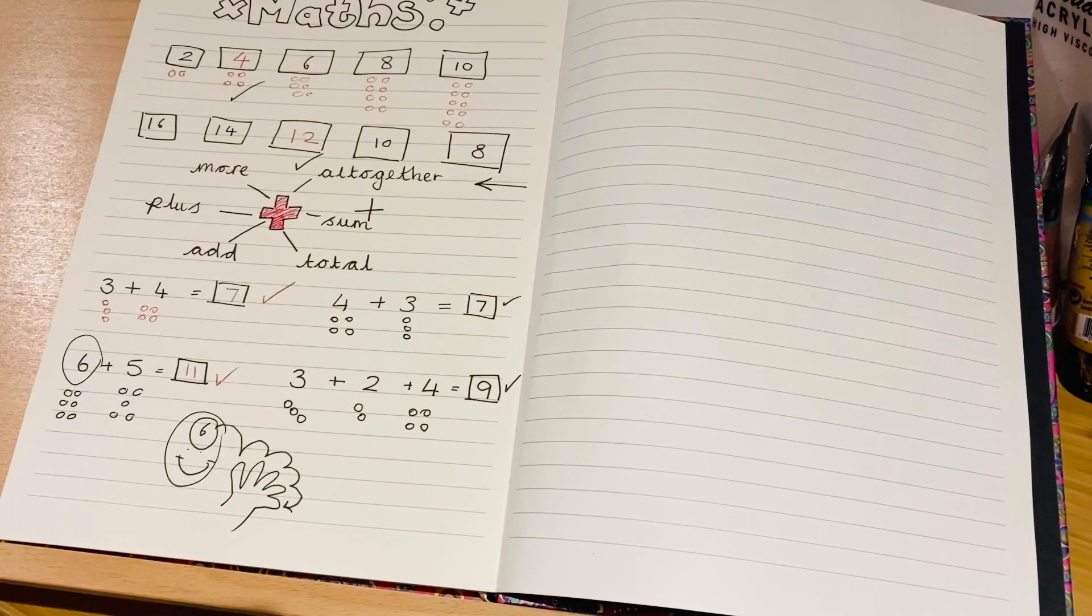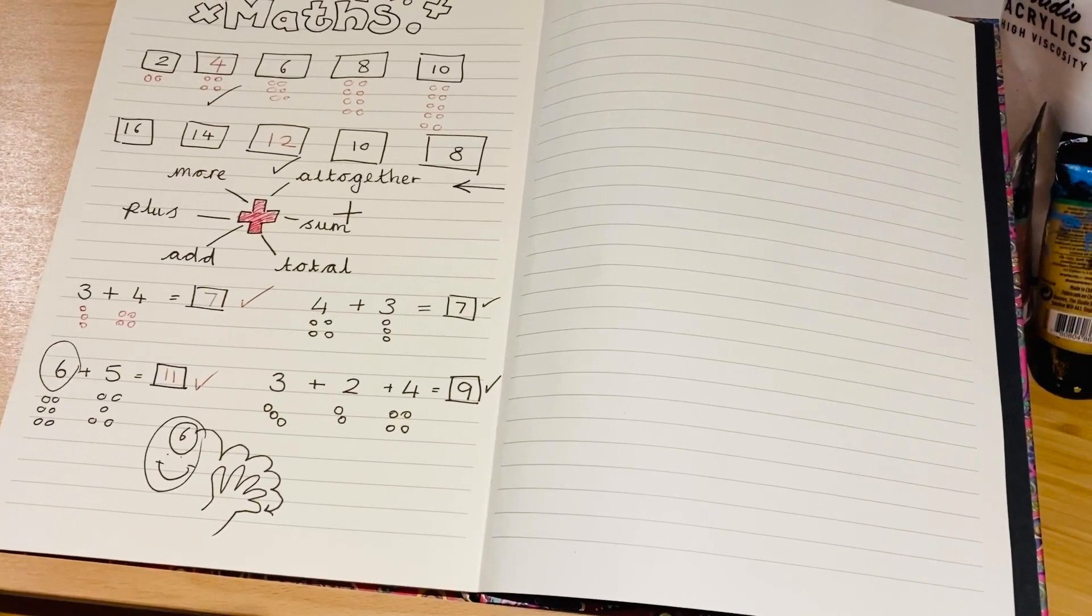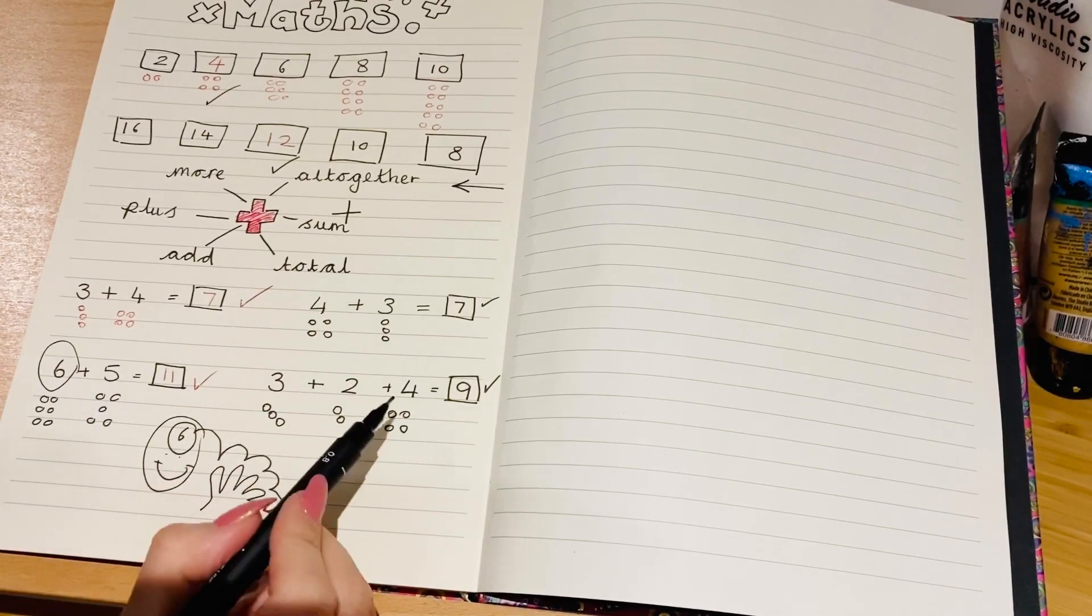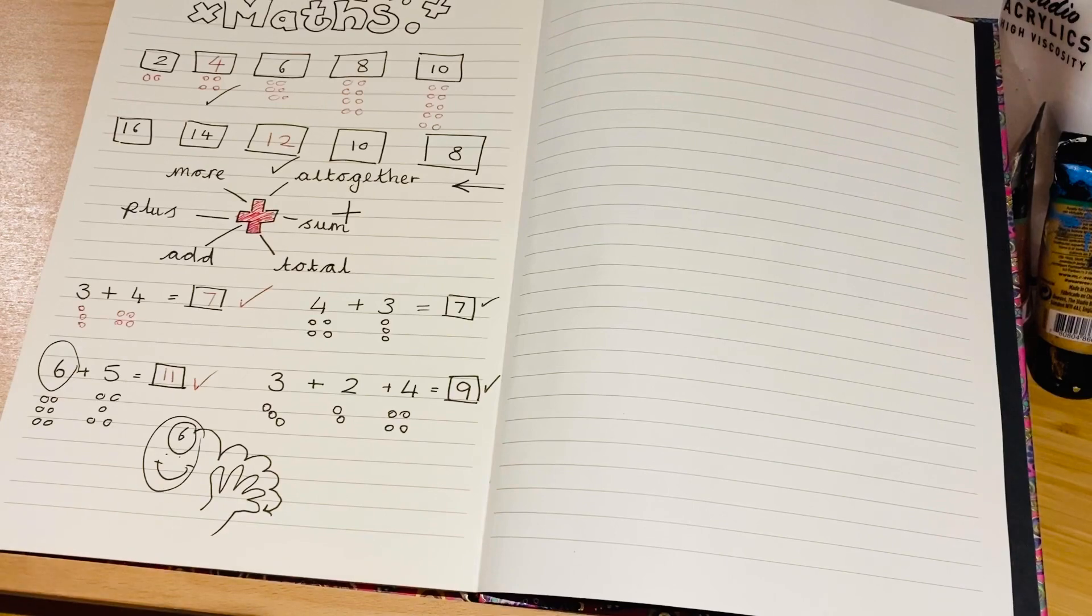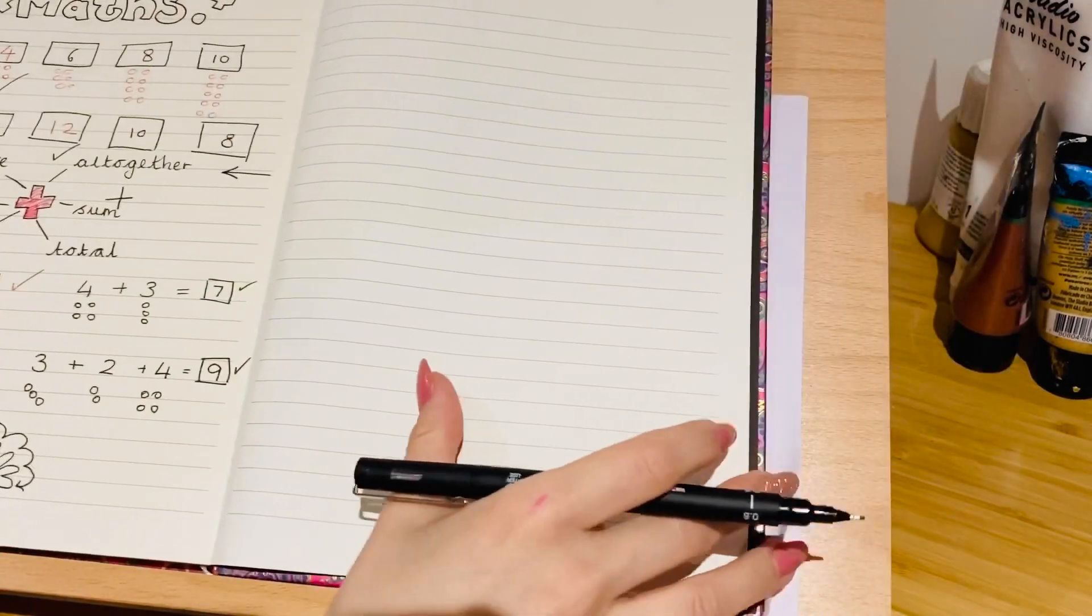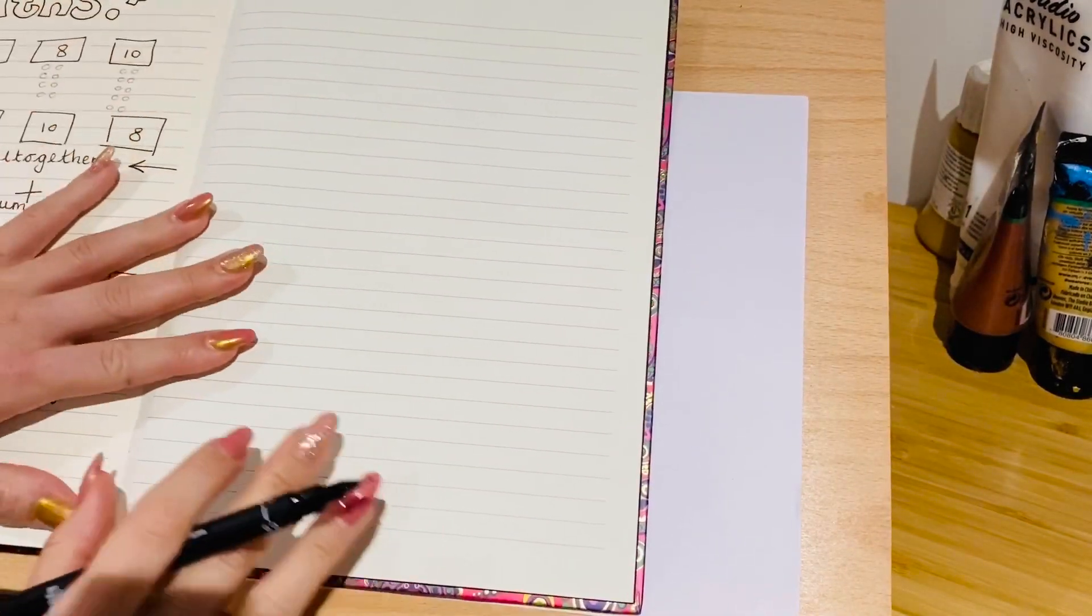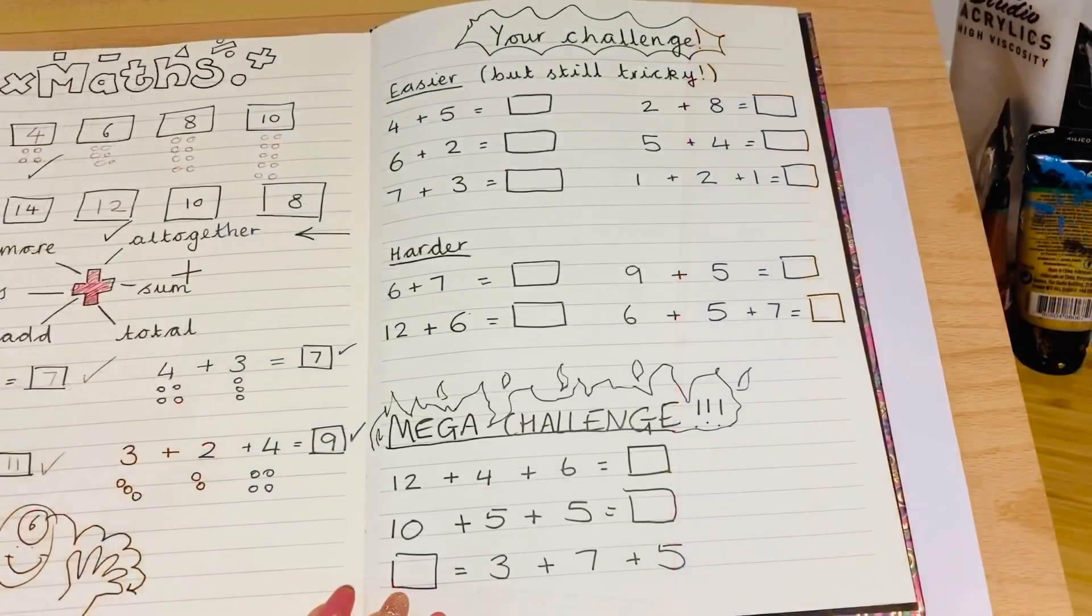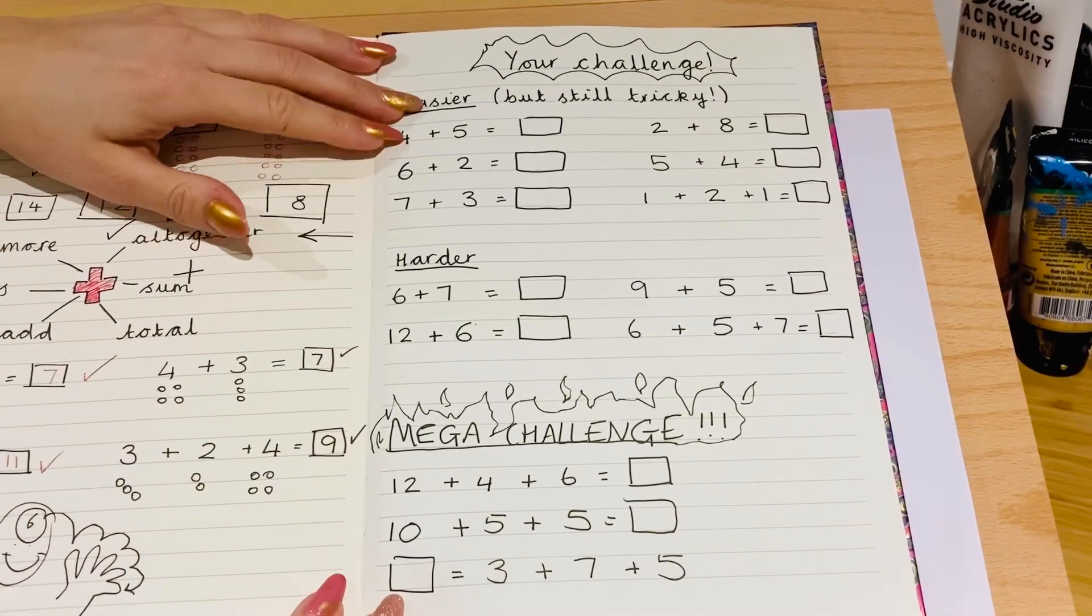See, we don't need to get worried when we see lots of numbers in a row, three or more, because it's just the same thing with an extra little addition there. Okay, so on this page, I'm going to set you up some questions to solve on your own now. So they're just going to appear on screen in a moment. Hang on.